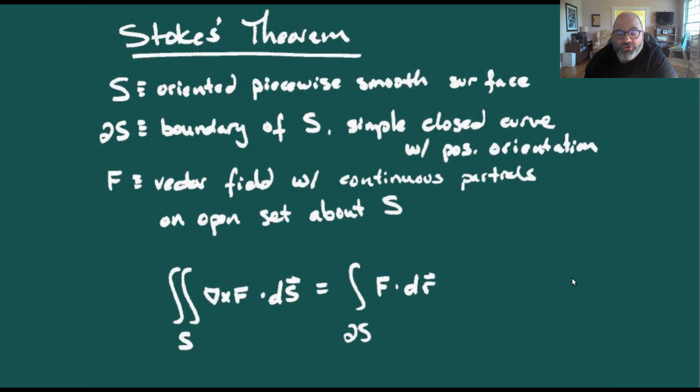Looking back at Stokes' Theorem, what are our hypotheses? We have an oriented piecewise smooth surface, the boundary of S, and a vector field with continuous partial derivatives. We have two sides: the integral of curl(F)·dS and the integral over the boundary of S of F·dr.